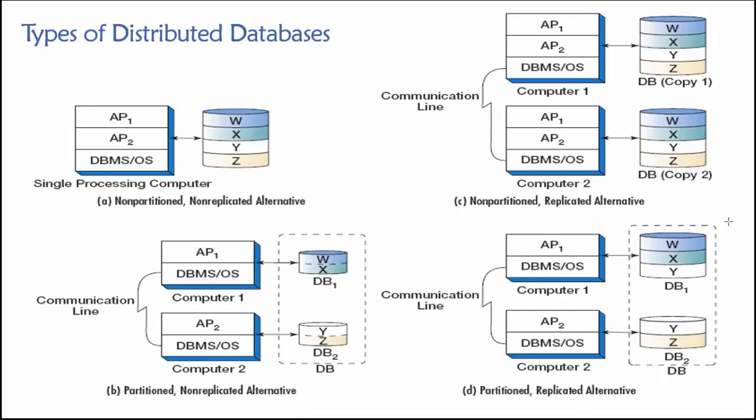And then of course, we have the hybrid design, which is illustrated down here in the lower right. So this is a partitioned replicated alternative where we are replicating or storing a copy of some of our data on multiple machines. And in this case, that would be table Y. So we have an exact copy of table Y here on both of these database servers. Maybe it's particularly important or valuable data.